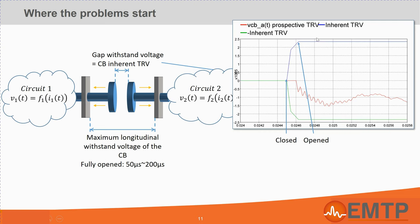We superimpose the prospective TRV of the circuit with the standard inherent TRV of the circuit breaker. One of the main constraints for a successful opening of the circuit breaker is that the prospective TRV remains inside the inherent TRV envelope. If it is not the case, there is the risk of a dielectric breakdown across the circuit breaker.